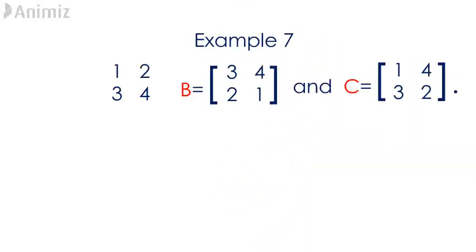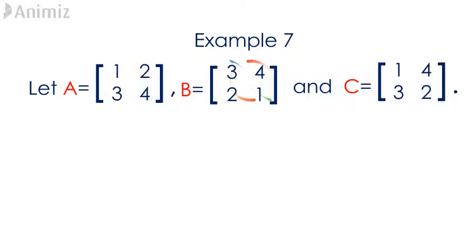Example 7. Let A, B and C be the matrices containing the elements 1, 2, 3, 4 and 3, 4, 2, 1 and 1, 4, 3, 2.